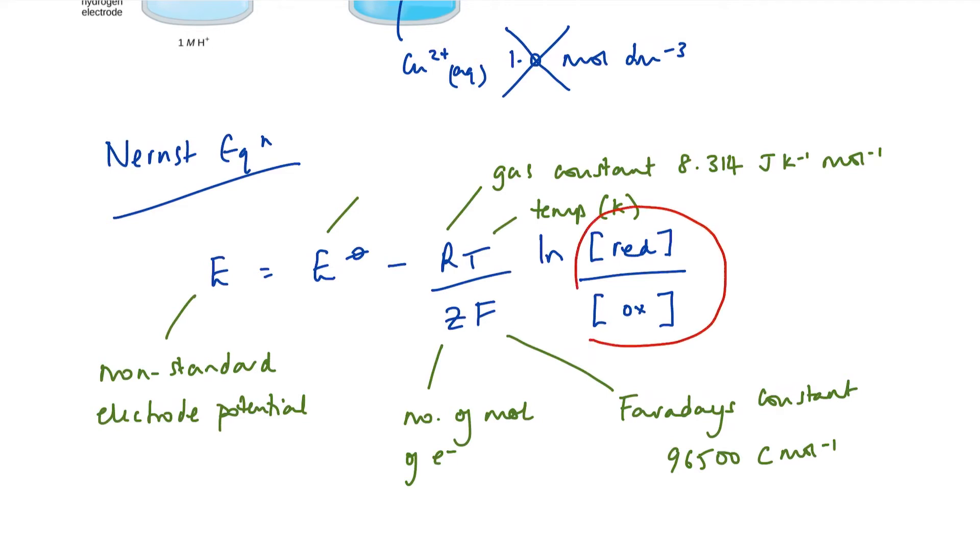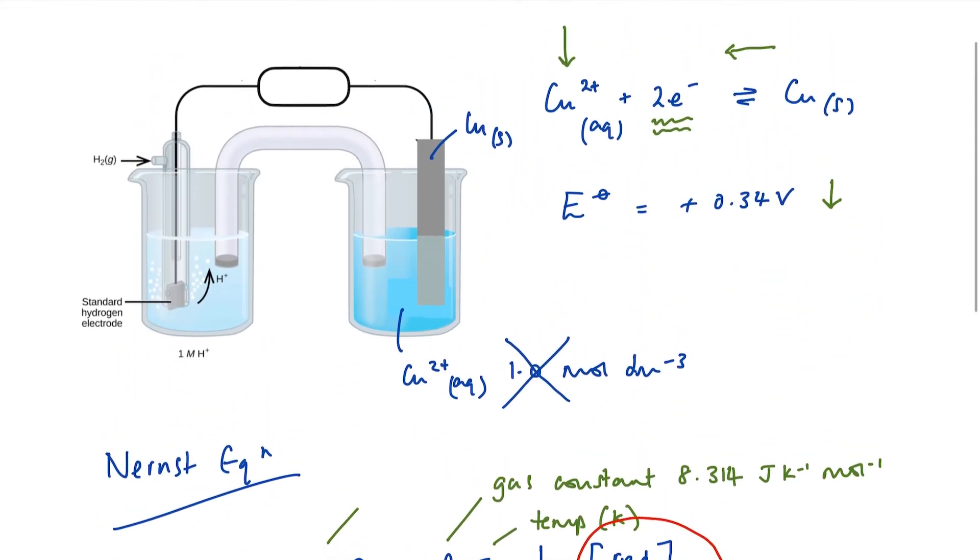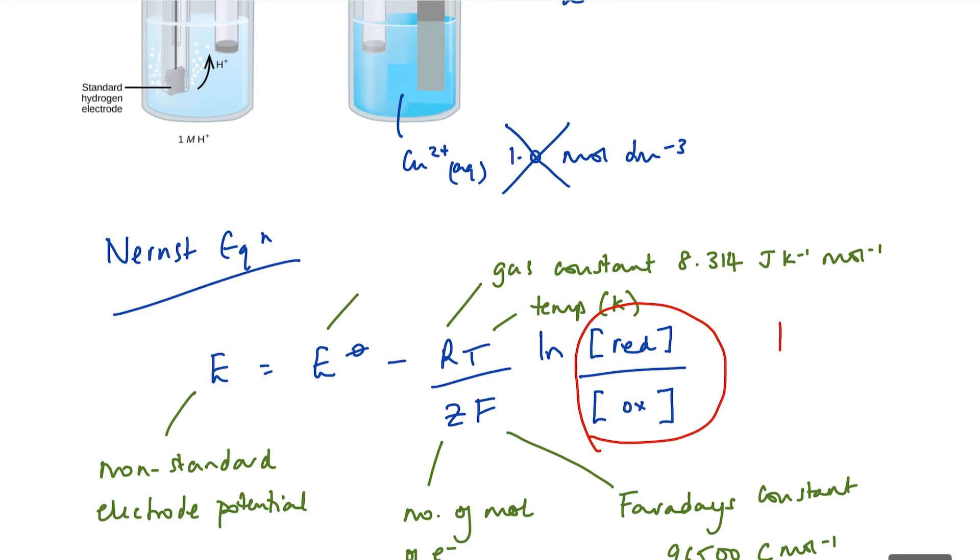How do we determine which is the reduced and which is the oxidized species? Well, if we go back to our half equation, we'll stick with this half reaction. Copper is our reduced species. It has its electrons. And the copper 2 plus is the oxidized species. It's lost electrons. If we are working with a half equation that's written as such, so our ion gaining electrons to form our metal or our reduced species, then we could also write this as LN concentration of the products over concentration of the reactants. And sometimes we see it written like that.